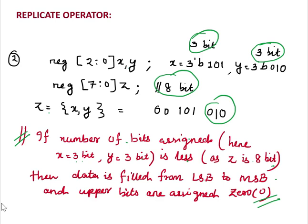That means first will be y. LSB will be first y. So y here is 010, then 101. This part is 101. So rest, rest means this another 2 bits, 2 bits will be 0. So this is how it works. This is the rule. So the MSB will be padded with zeros if assigned number of bits is less than number of data.